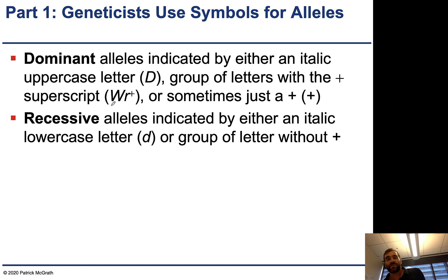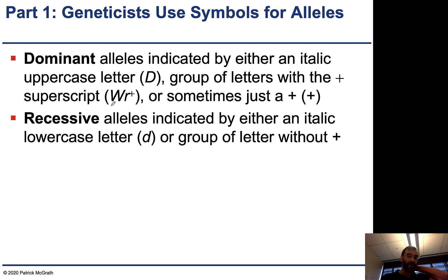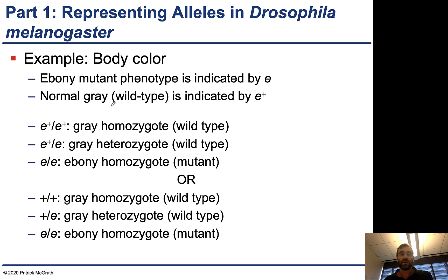Geneticists use symbols for alleles. Dominant alleles are indicated by either an italic uppercase letter, or a group of letters with a plus superscript, or sometimes just a plus. This designation is traditionally used by people who work with Drosophila, a very popular model organism where many fundamental rules of genetics were discovered after Mendel. A recessive allele is indicated either by an italic lowercase letter or a group of letters without a plus.